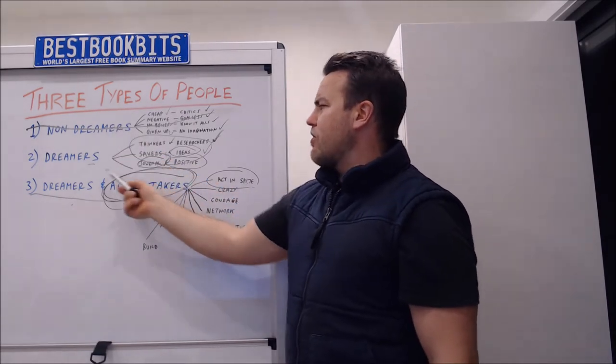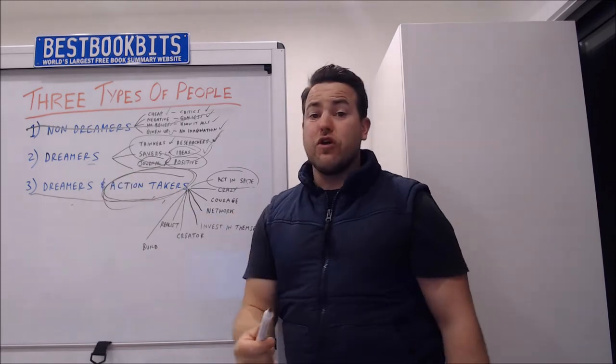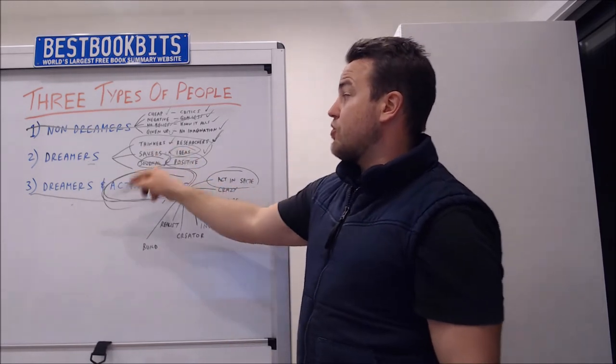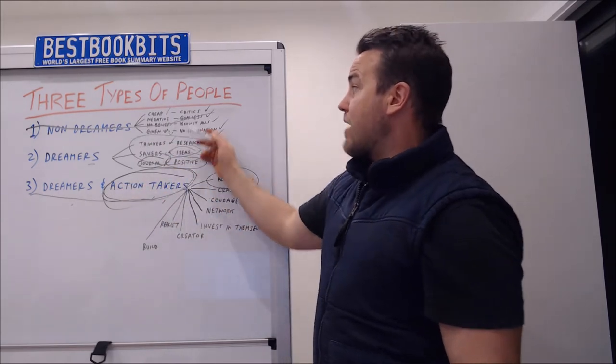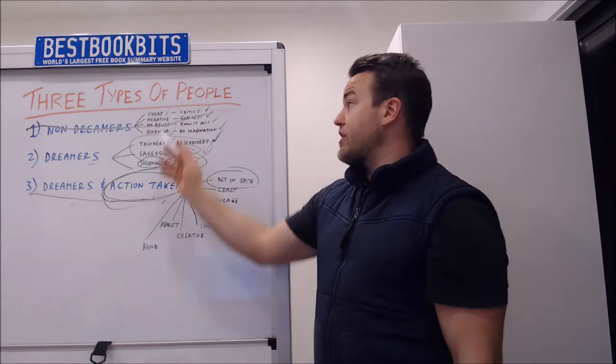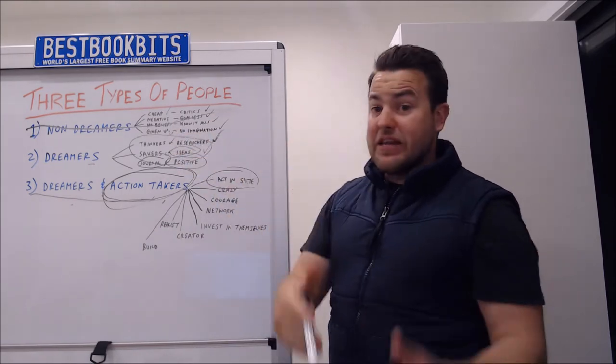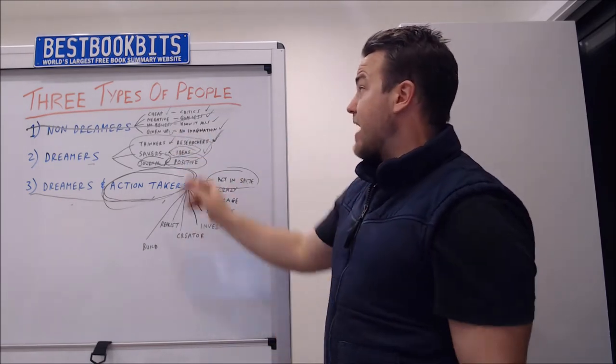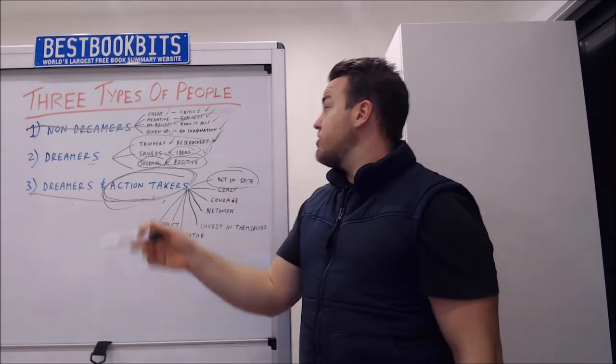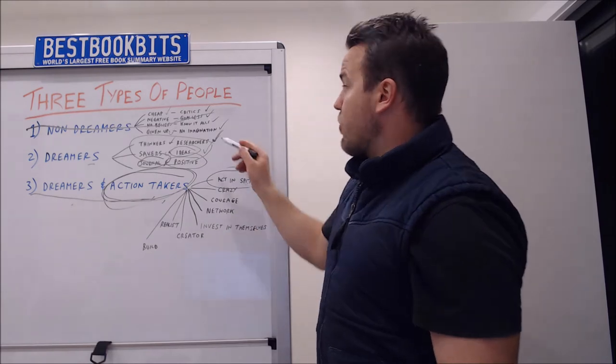And also acts in spite of dreamers who don't act. So that's the biggest difference between number two and number three. They have the same characteristics. All dreamers and action takers at one stage or another have been cheap. They've been critics. They've been negative. They have been goalless. They had no belief. They thought they knew it all. They've also given up at a stage and they had no imagination.